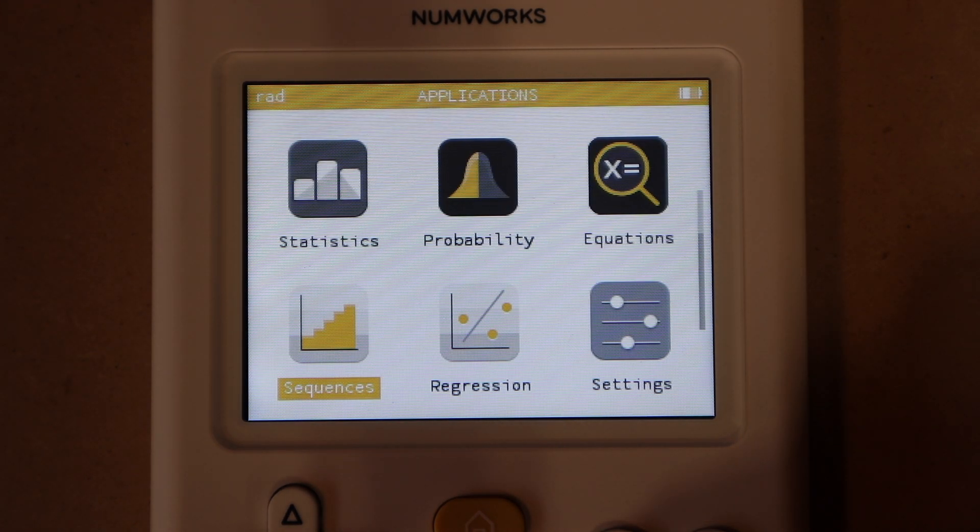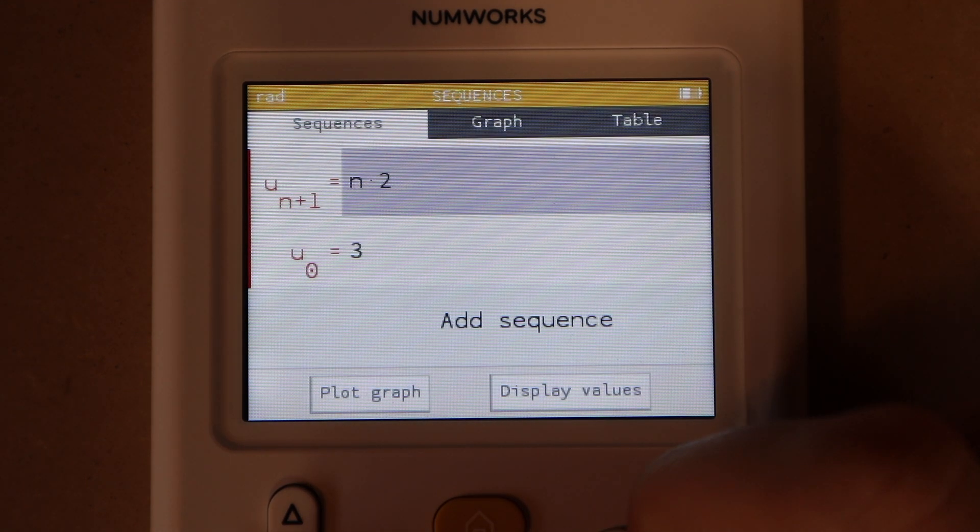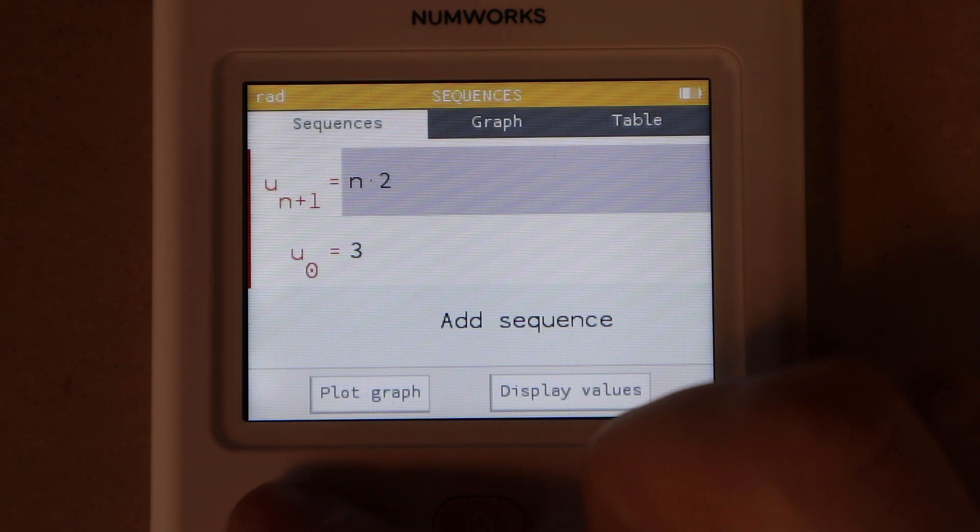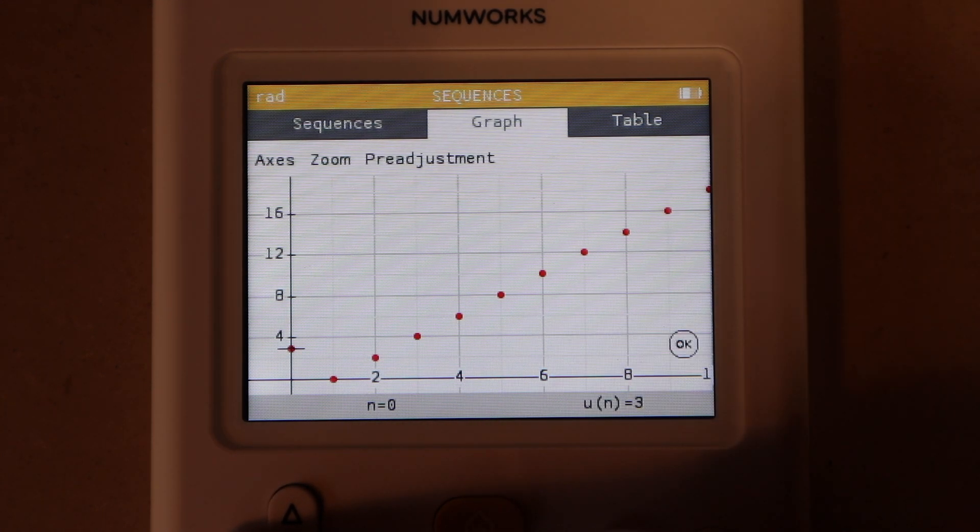This app is very similar to the functions graphing app except it's for sequences. So I have pre-entered these values in here, and then when you go up to the graph tab you get a nice plot of all of the points.